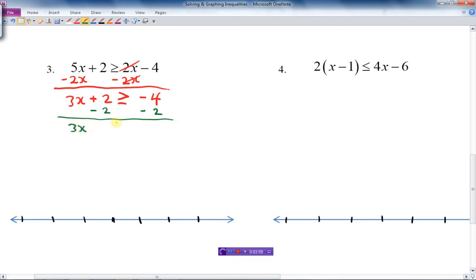3x is greater than or equal to negative 6. And lastly, positive number I'm dividing by, so I leave the symbol the same. The 3's are gone, just like the 2's were gone with that question before, and I get x is greater than or equal to negative 2.